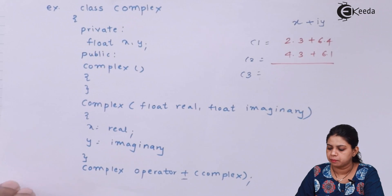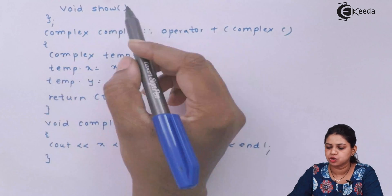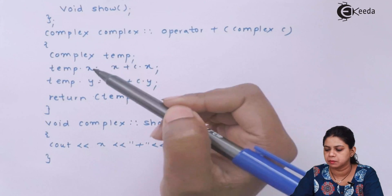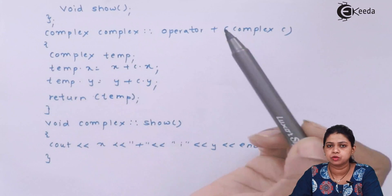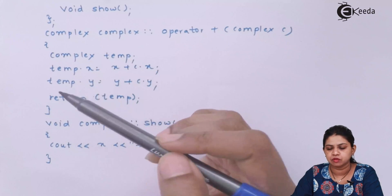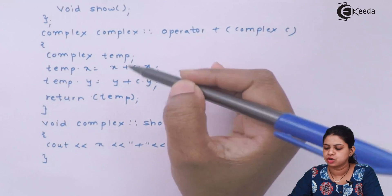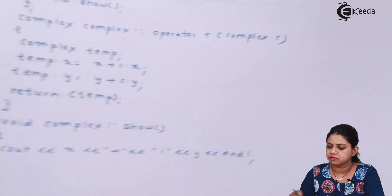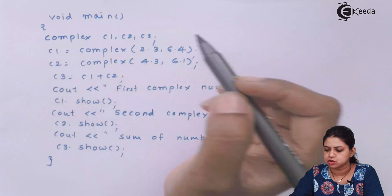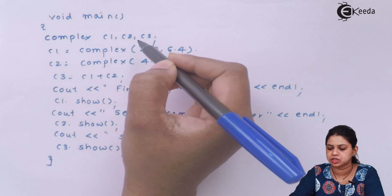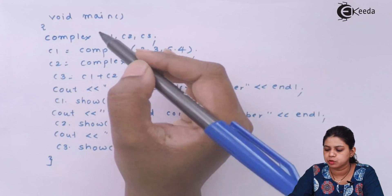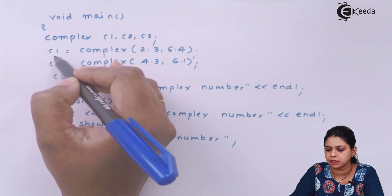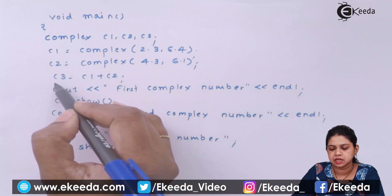This is the syntax of operator overloading: 'complex operator+(complex)'. It means I am overloading the plus operator. The void show() function is used to display the addition of two complex numbers. Since we have three complex numbers, we need to create three objects: c1, c2, and c3, where c1 is the first complex number, c2 is the second, and c3 will be the result of c1 + c2.